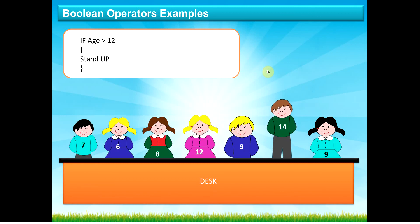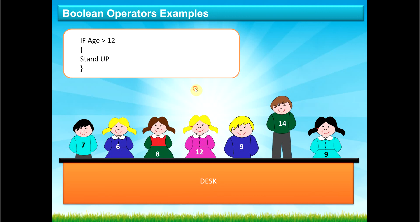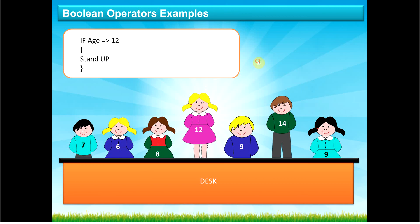Moving on: if age > 12, stand up. Only one person has an age greater than 12, so just that one person stood up. Notice the young lady with age exactly 12 did not stand — because greater than 12 means they must be older than 12, not equal to it. Now if age >= 12: if you are equal to 12 or older than 12, stand up. This time two people stand up — the student who is exactly 12 and the one who is older than 12.